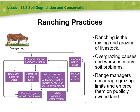Next, we have ranching practices. Ranching is the raising and grazing of livestock. Overgrazing causes and worsens many soil problems. Range managers encourage grazing caps and enforce them on publicly owned land. Overgrazing compacts soil and damages its structure, removes native grass and exposes bare topsoil, and allows invasive species to outcompete native species due to the altered environment.